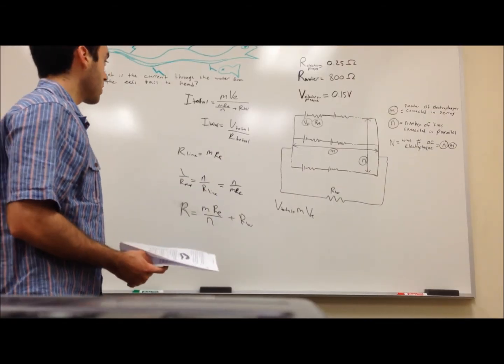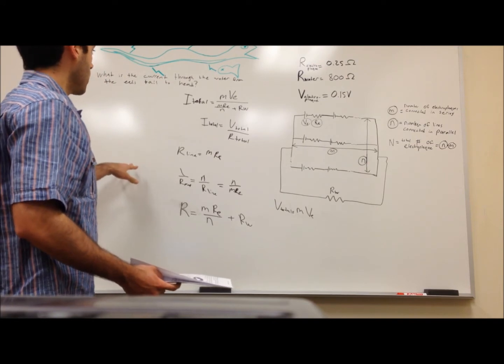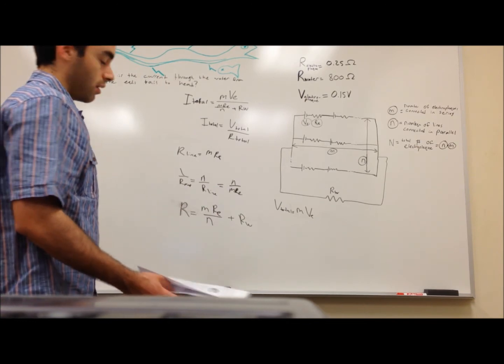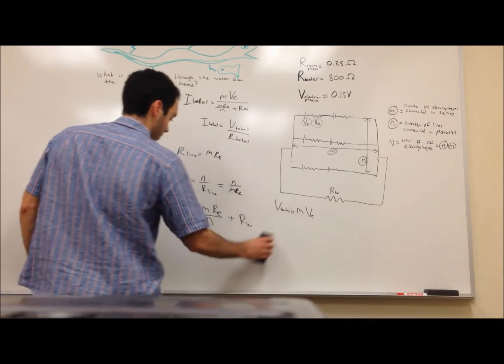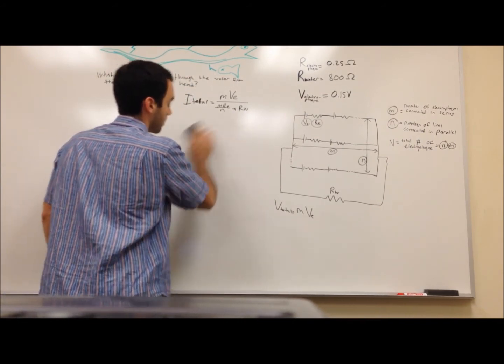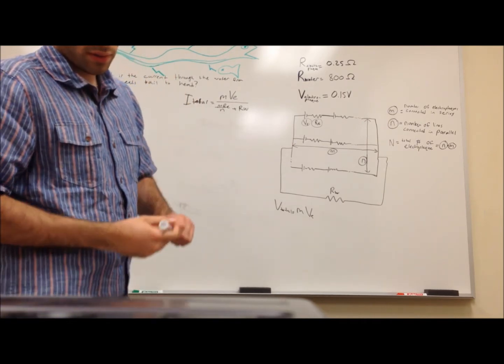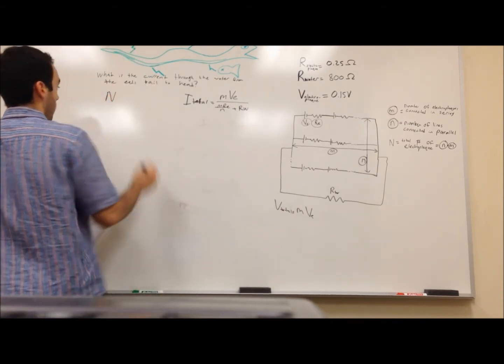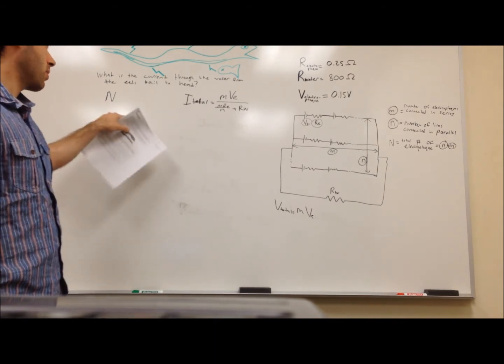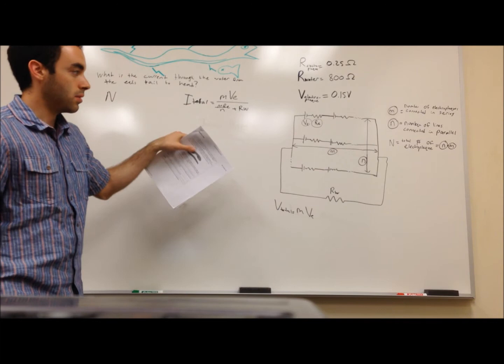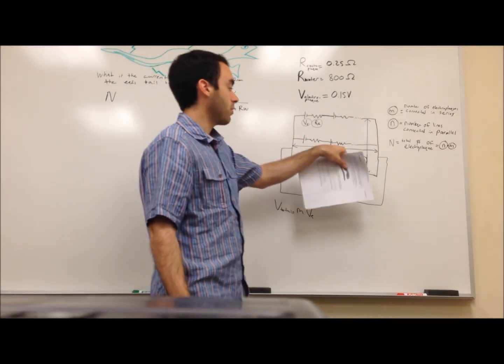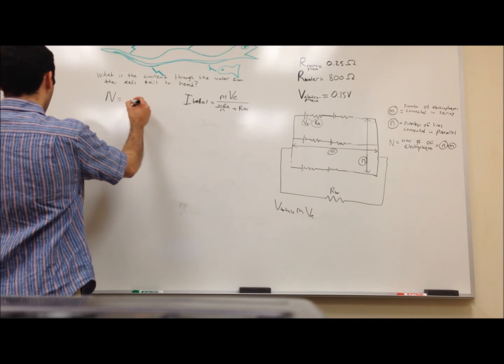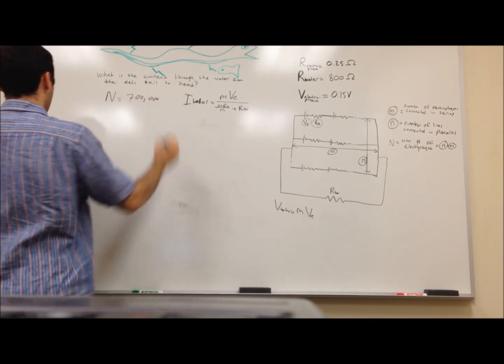Now that we have an expression for the total current, we're probably going to want to plug in values for m and n. And we can get these values from cutting open eels and figuring out how large the dimensions of the organs of these electroplaques are. So we are told that there are roughly 700,000 electroplaques in total in an eel. We have this capital N represent the total number of electroplaques. So this capital N equals little n times little m. And we can get that from this circuit because we have m number of electroplaques in series and n number of lines of electroplaques parallel to each other. So big N equals 700,000 electroplaques.